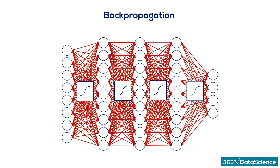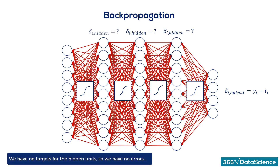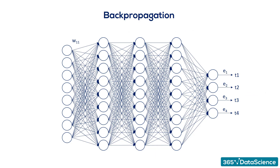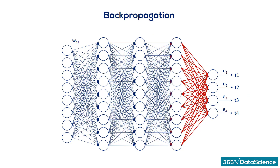Finally, to update the weights, we must compare the outputs to the targets — and this is done for each layer. But we have no targets for the hidden units; we don't know the errors. So how do we update the weights? That's what backpropagation is all about. We must derive the appropriate updates as if we had targets. The way academics solve this issue is through errors: the main point is that we can trace the contribution of each unit, hidden or not, to the error of the output.